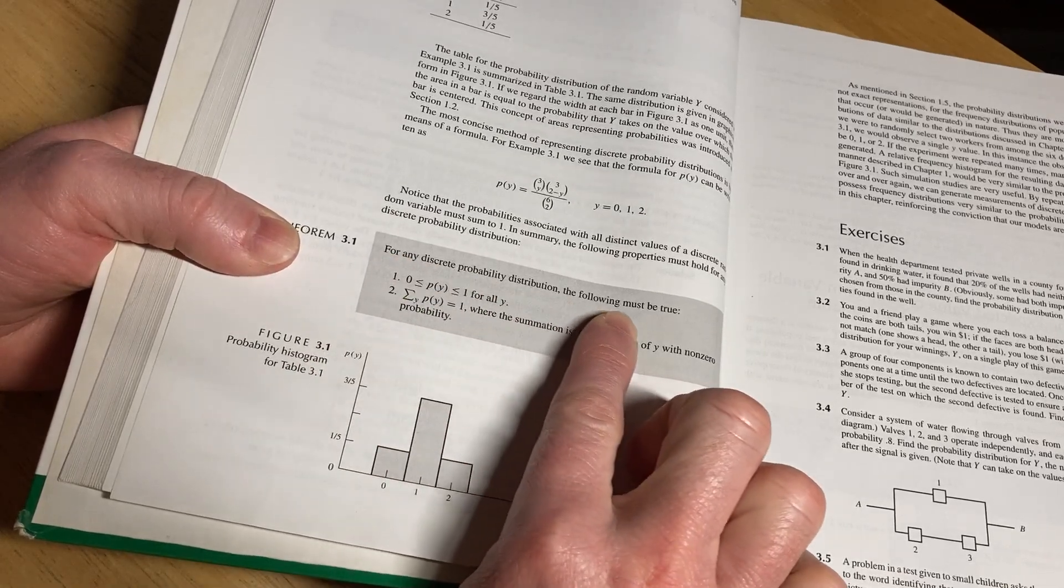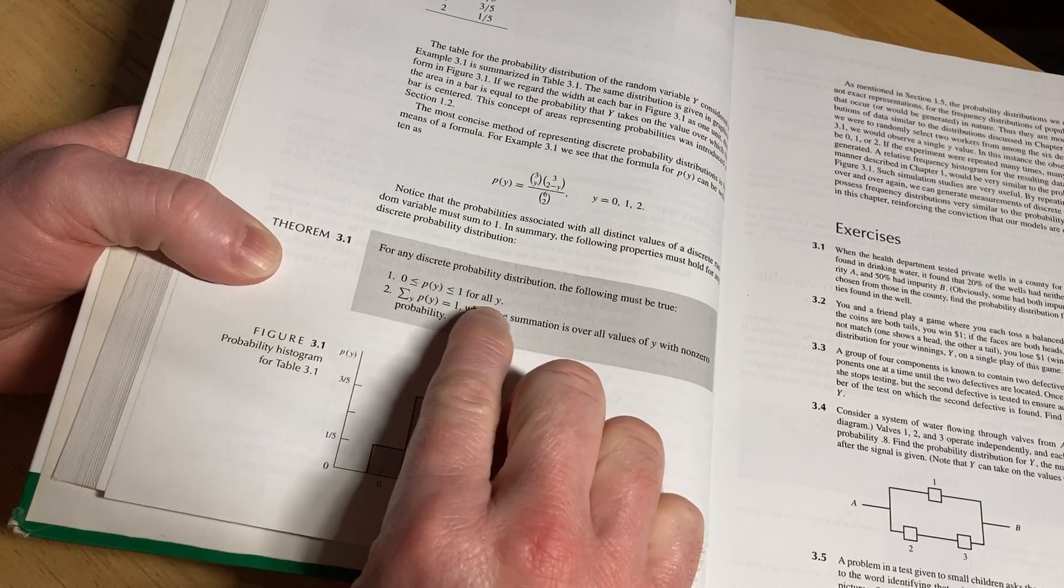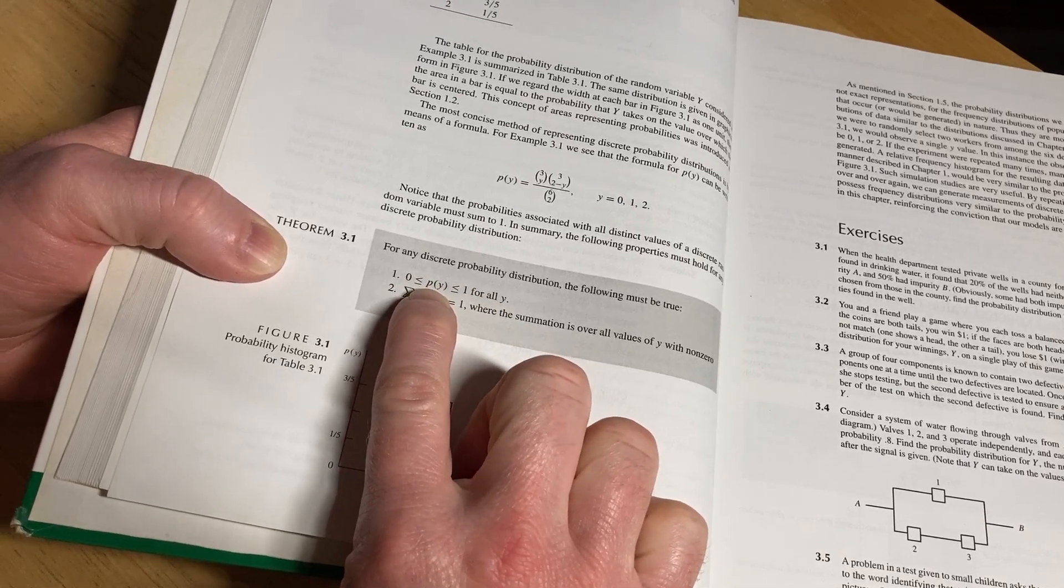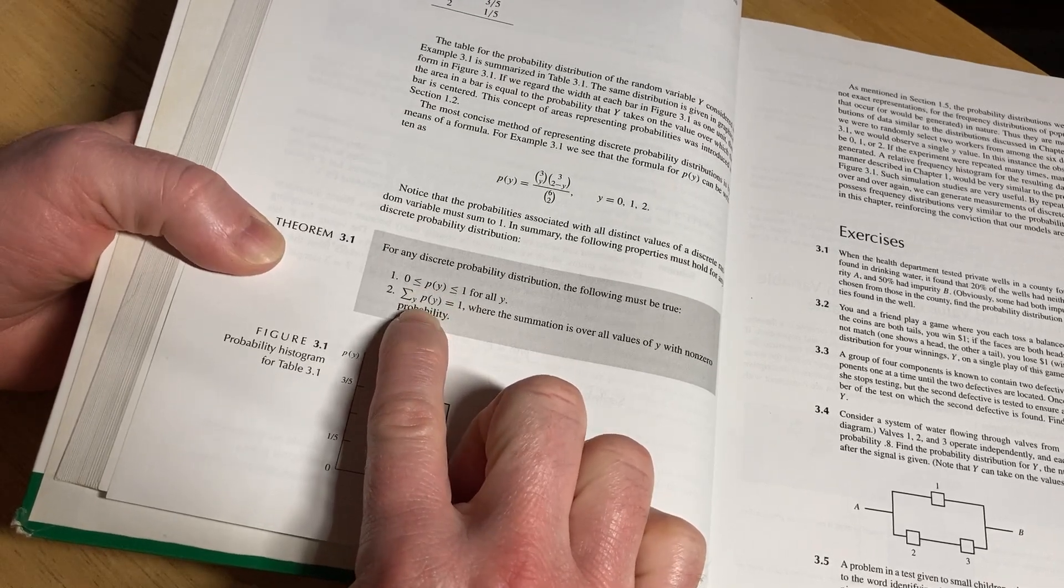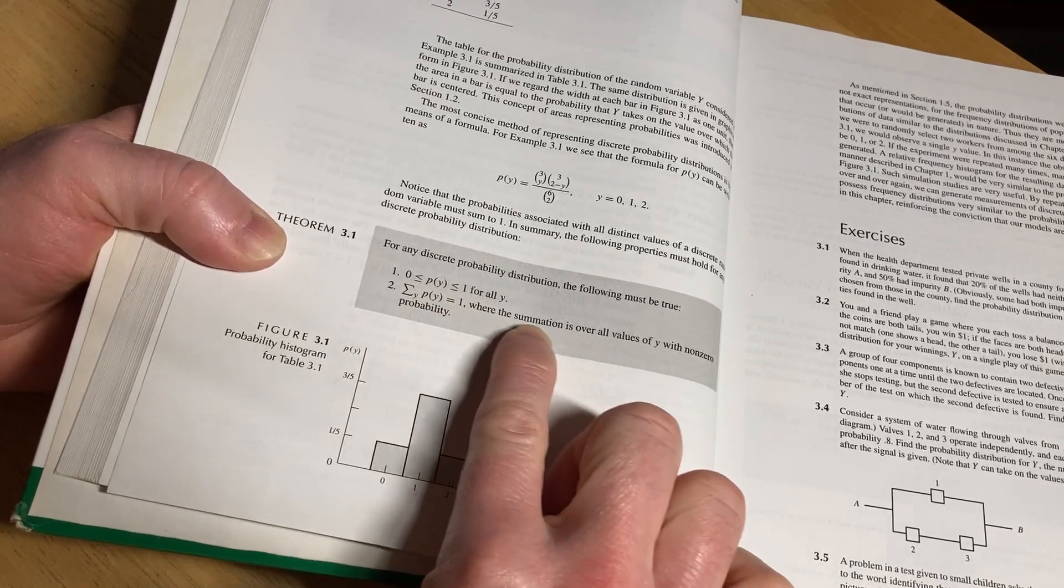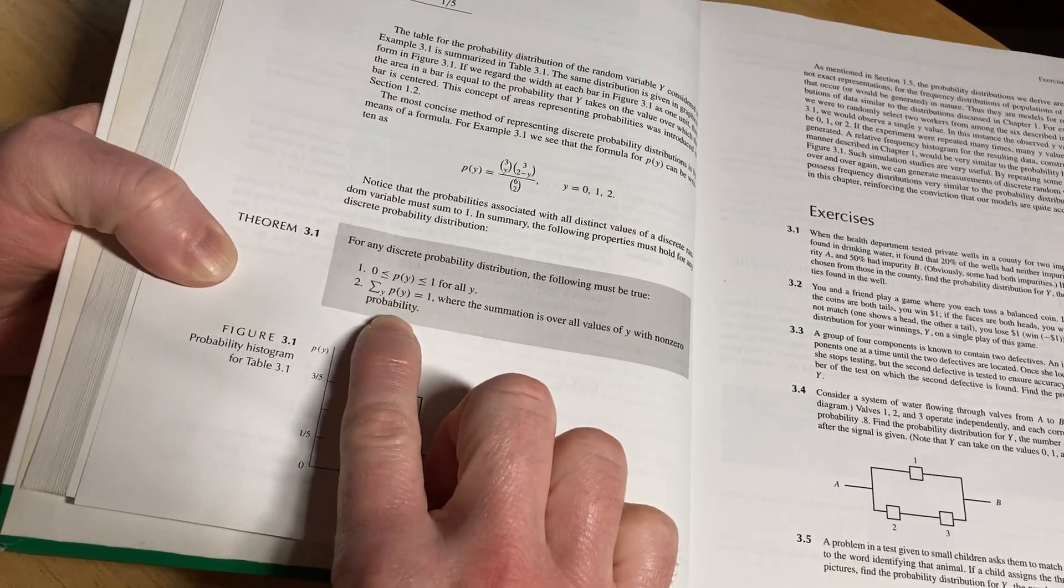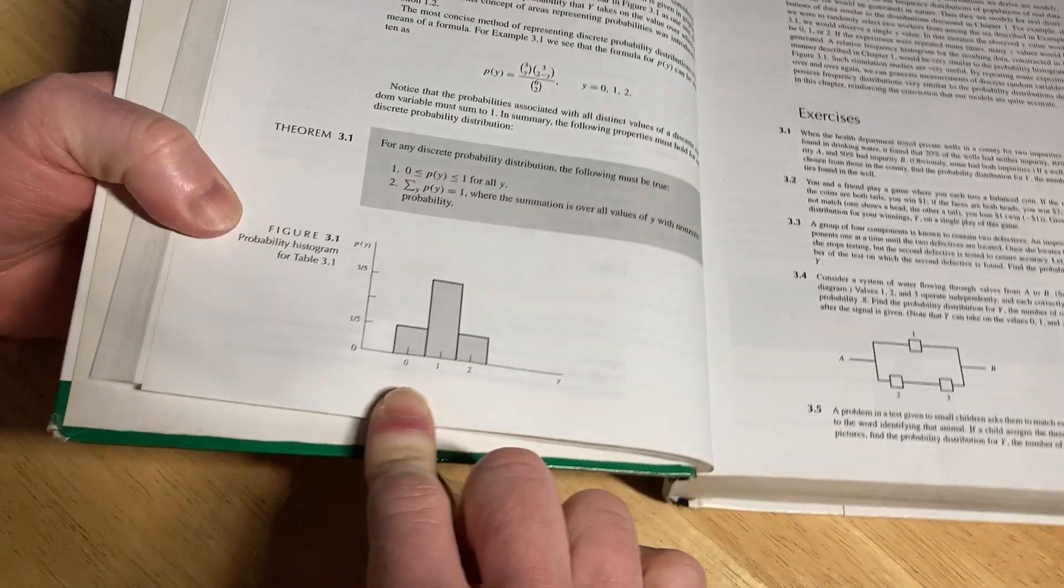For any discrete probability distribution, the following must be true. So the probability of little y for all y needs to be between zero and one. In other words, it needs to be a valid probability, right? Probabilities are numbers between zero and one inclusive. And then if you add up all the probabilities, you should get one, where the summation is over all values of y with non-zero probability. Cool. And then here's a histogram.